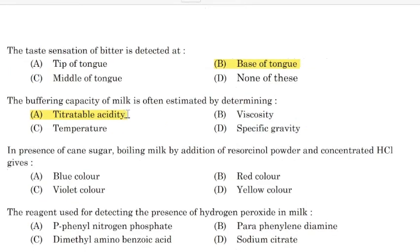Correct answer: Option A — Freezing point. In presence of cane sugar, boiling milk by addition of resorcinol powder and concentrated HCl gives —